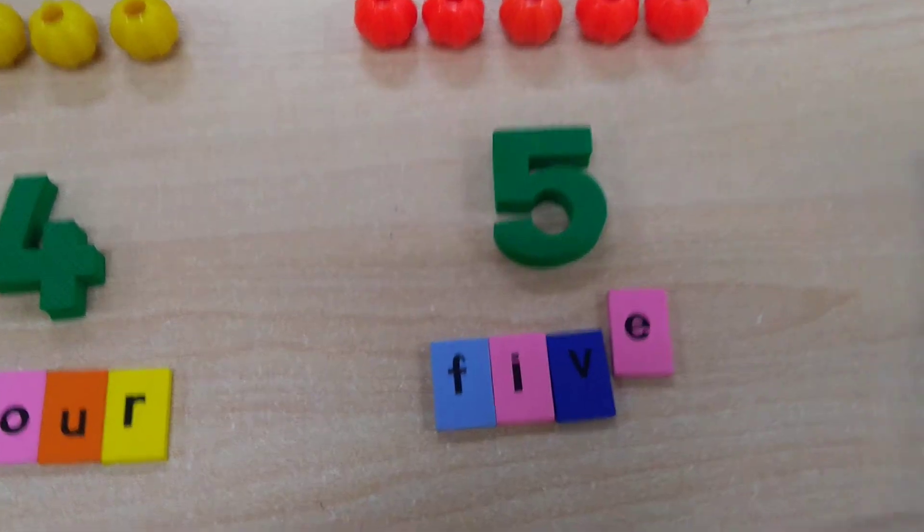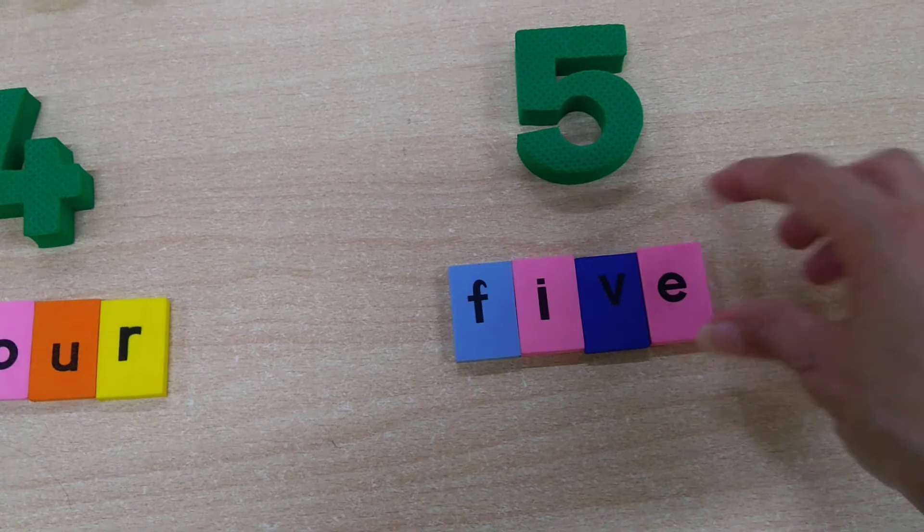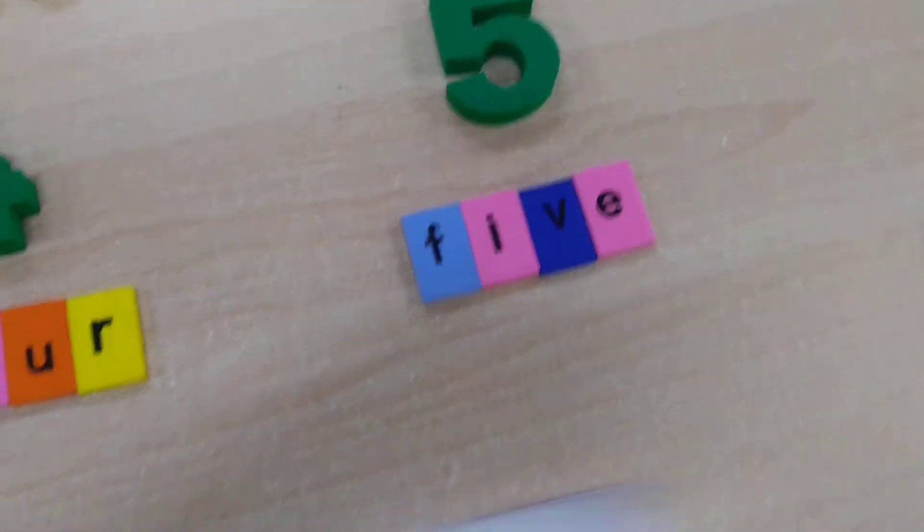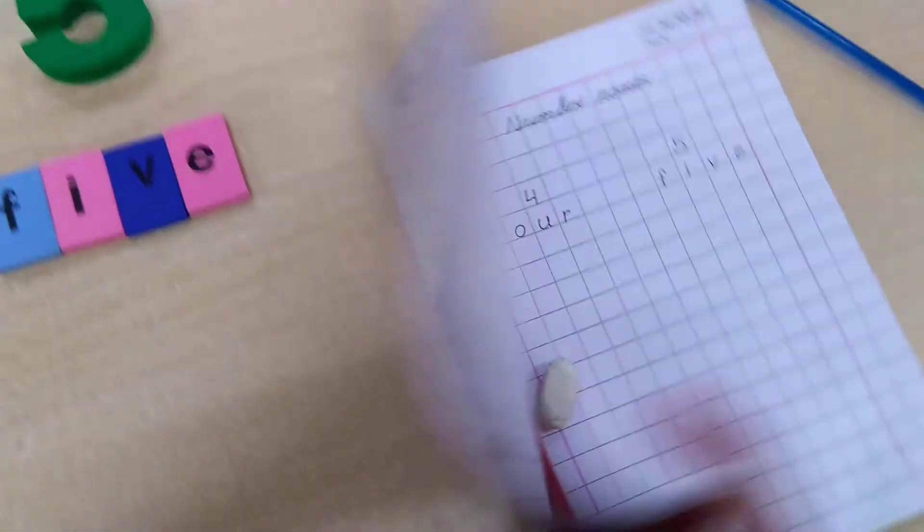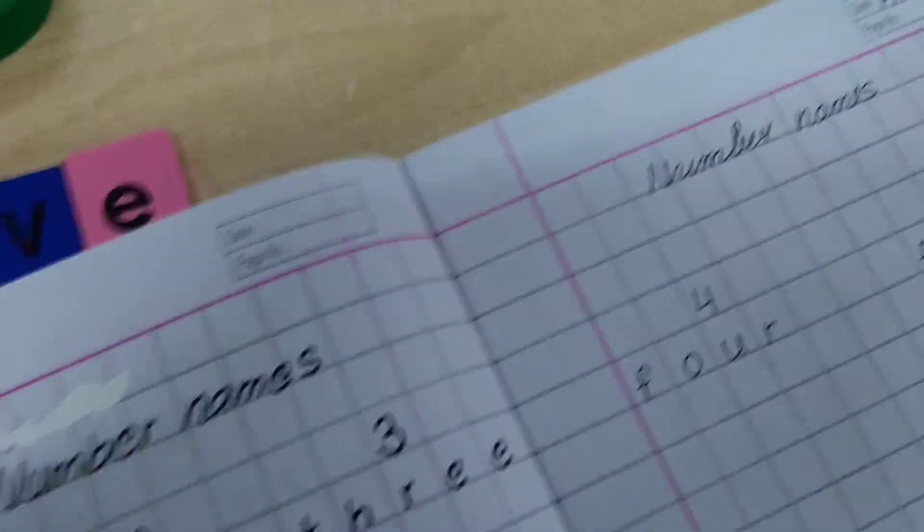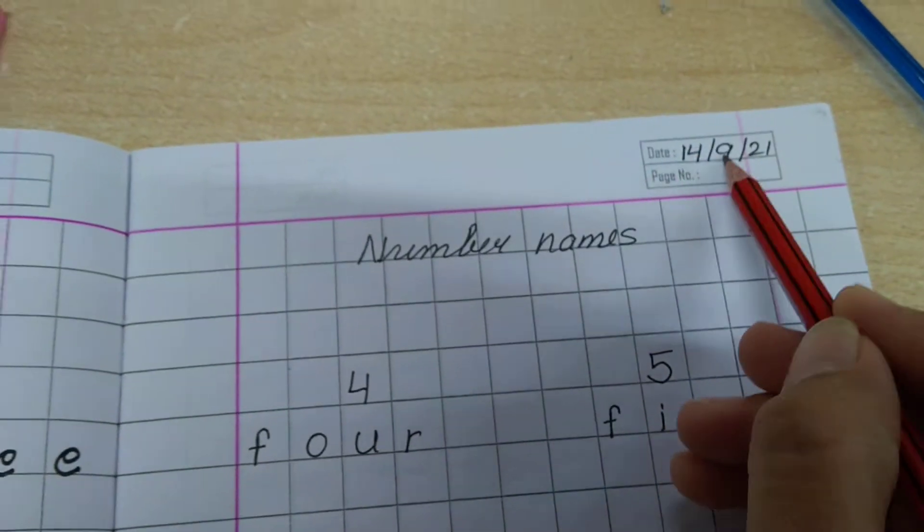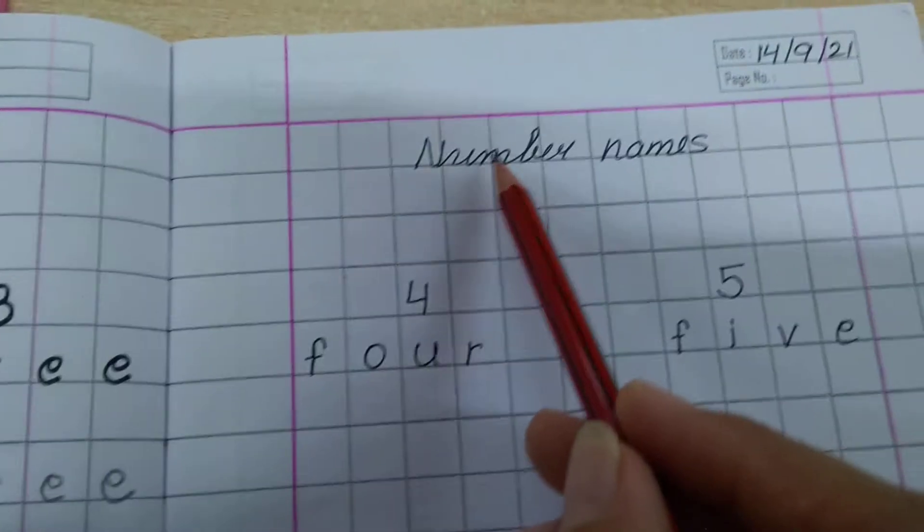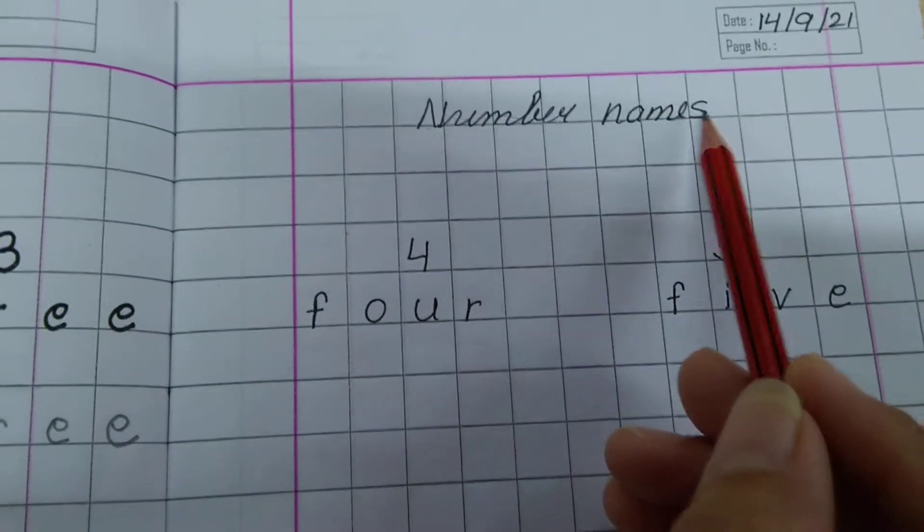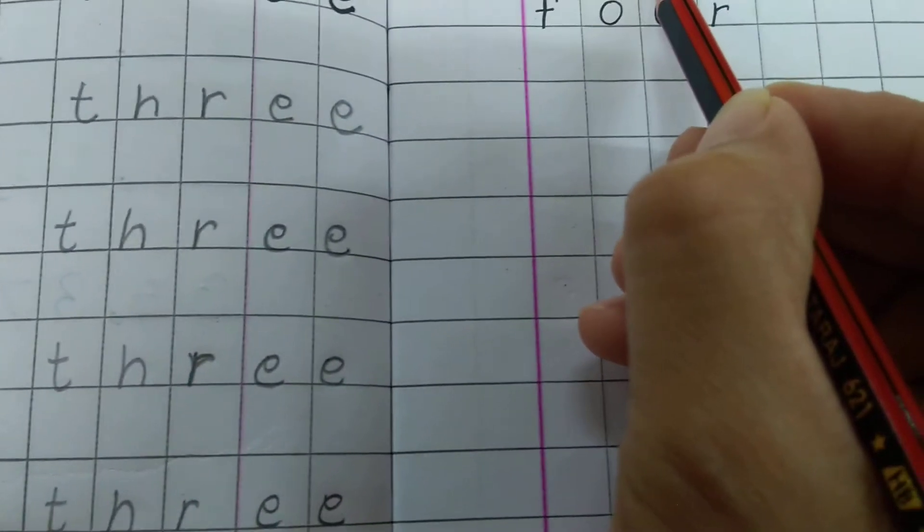This is the spelling of number 5. Now children, we will write number names in our notebook. You will write date on the top. Then you will put the heading number names. Now which number is this?